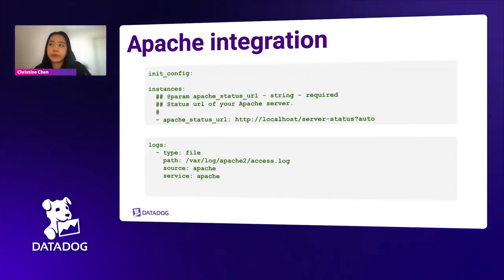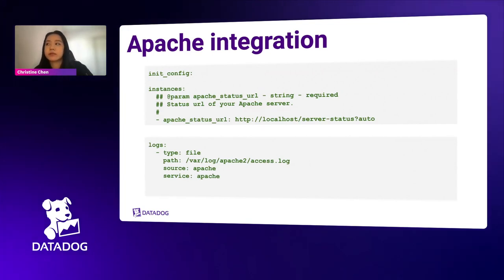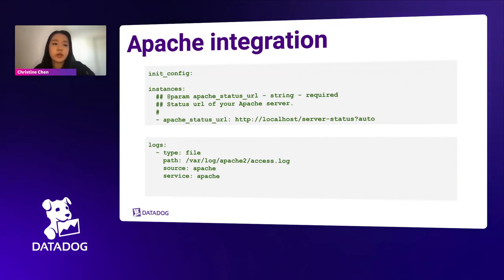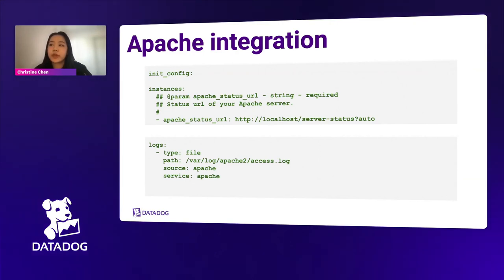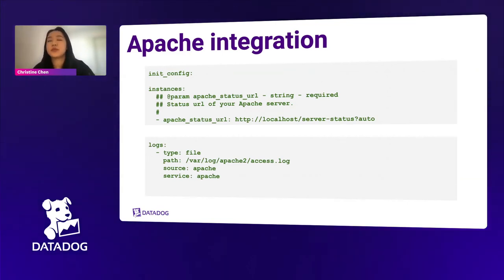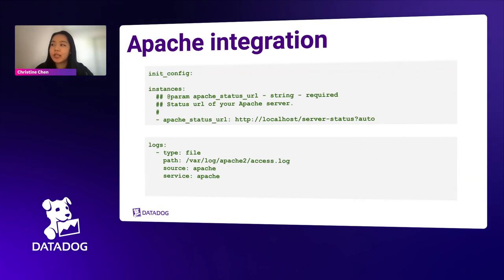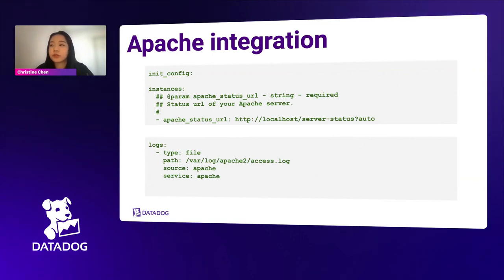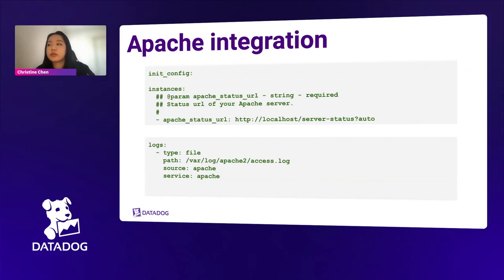An example of a supported integration is Apache. Here we can see the configuration parameters — these are specific to the individual integration. The Apache integration requires an Apache status URL configuration field, which is used by the integration to collect metrics. In the second part, we see the logs configuration, where we specify the path of the Apache log, tagged by source and service. This basic configuration allows the integration to collect metrics and logs from your Apache service. You can also specify multiple instances for one agent to monitor multiple Apache services.